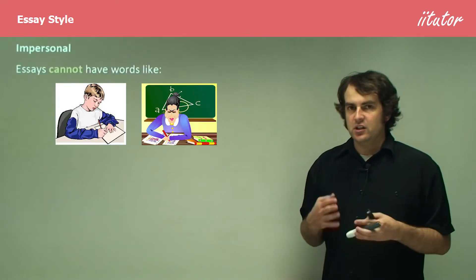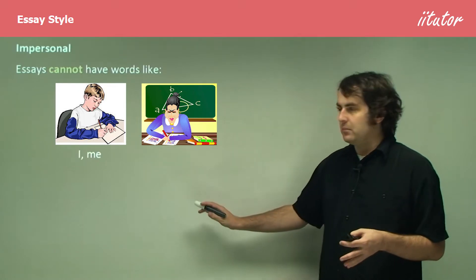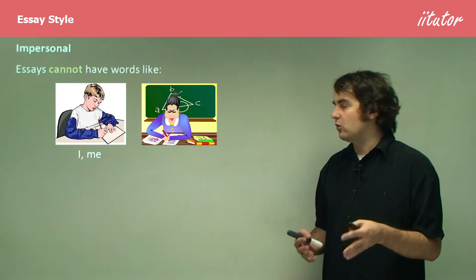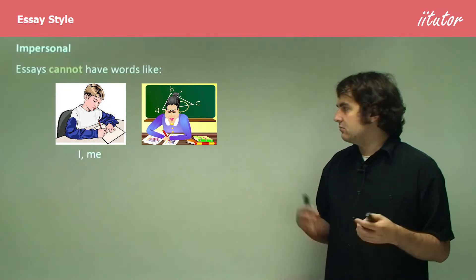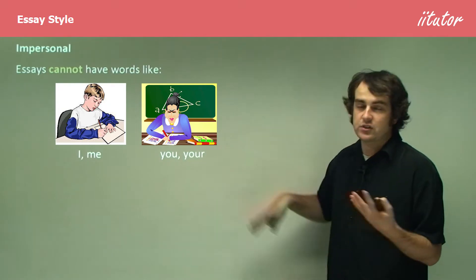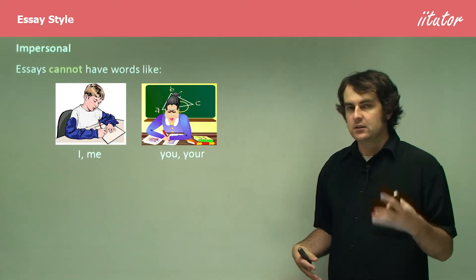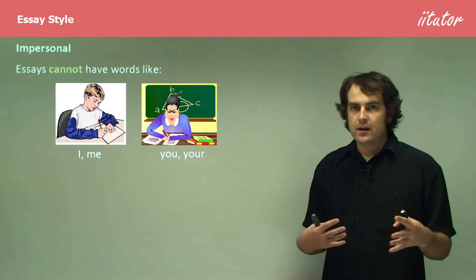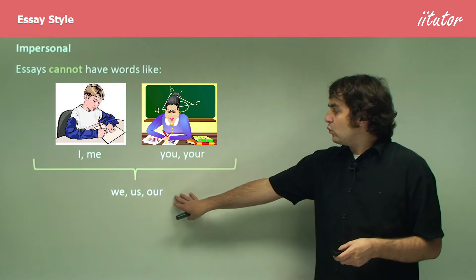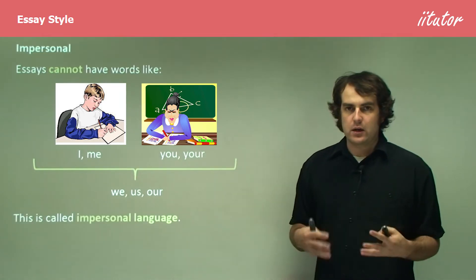An essay needs to be impersonal. An essay cannot have words like 'I' or 'me' — so it can't be written from your personal perspective. You can't say 'I think this' or 'I think that.' Nor can you talk to your marker — you can't say 'you' or 'your.' You're not speaking to them directly or having a face-to-face conversation with them. You cannot use the words 'we,' 'us,' or 'our.' This is what we mean by impersonal language.